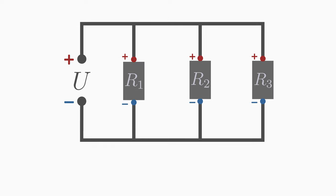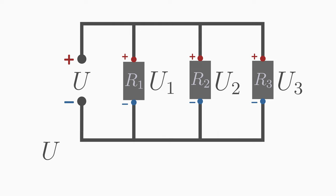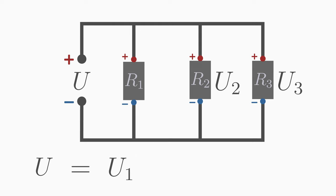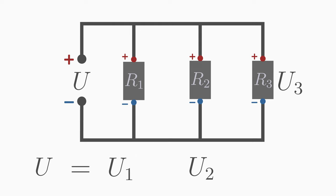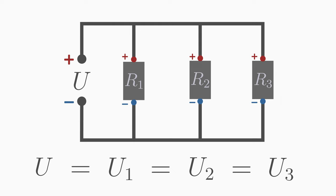In a parallel circuit, on the other hand, you will measure the same voltage across all three resistors. The total voltage is therefore equal to the voltage U1 between the ends of the first resistor, but also equal to the voltage U2 and U3.